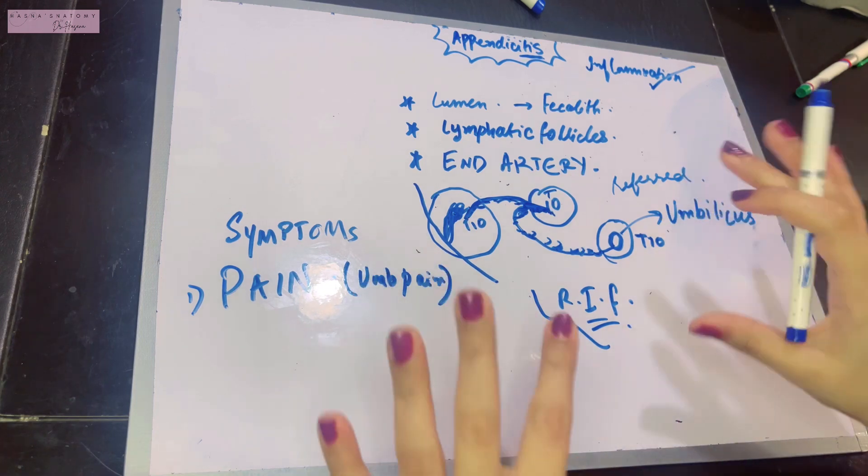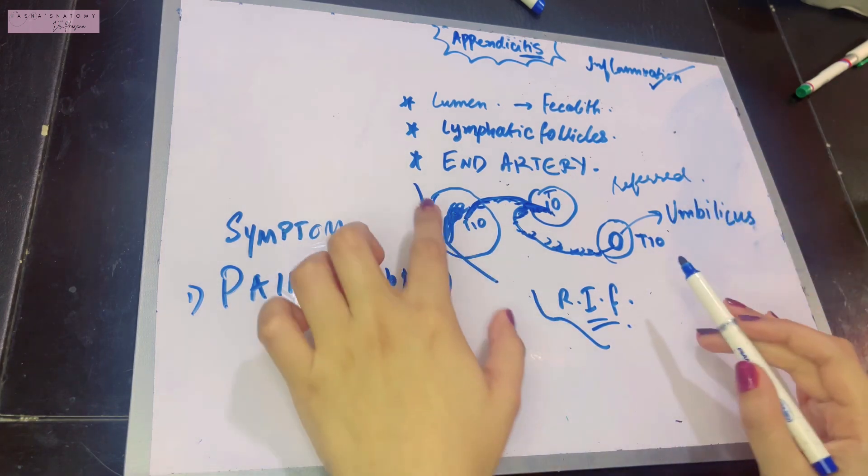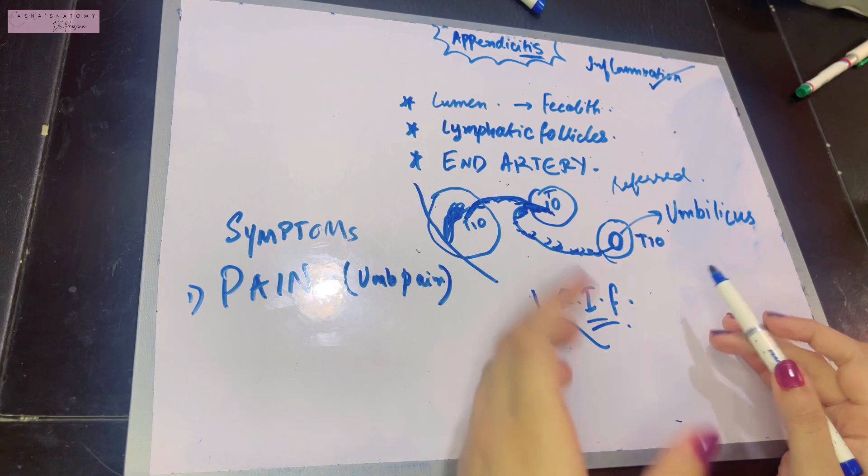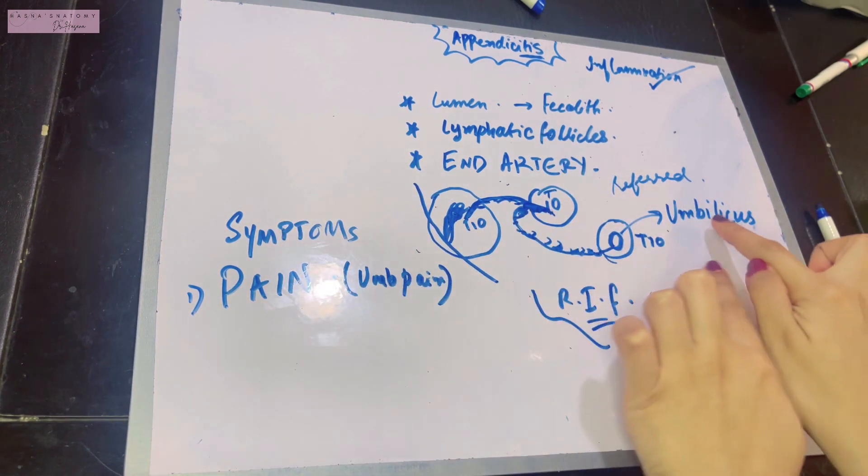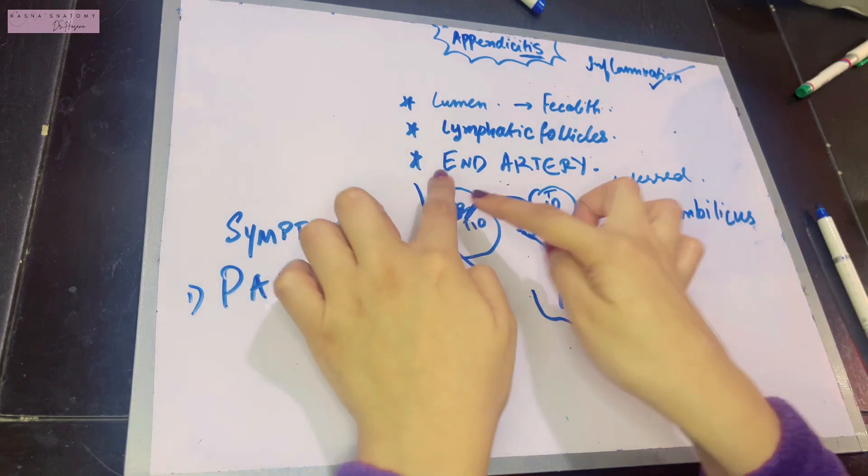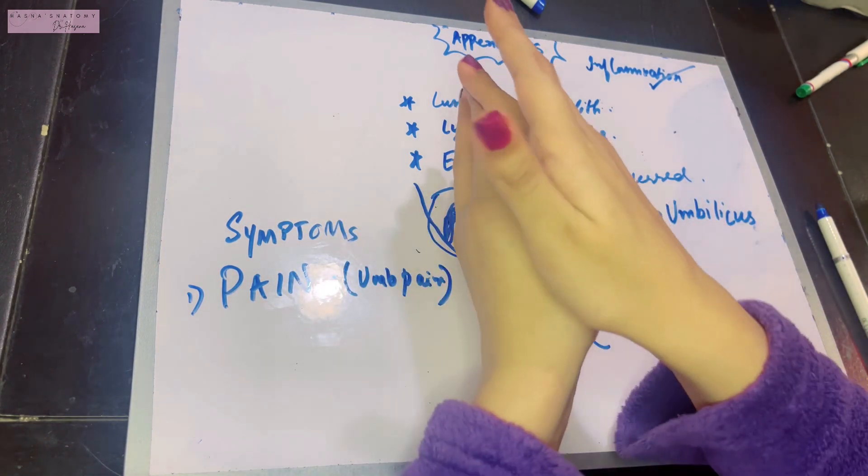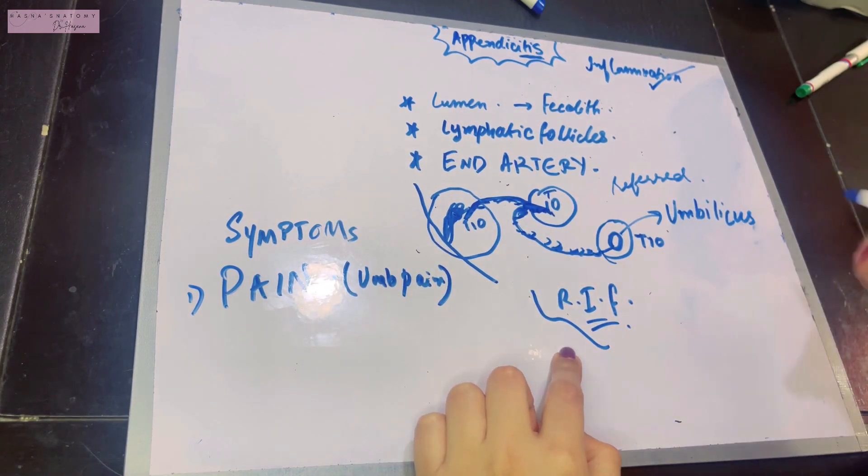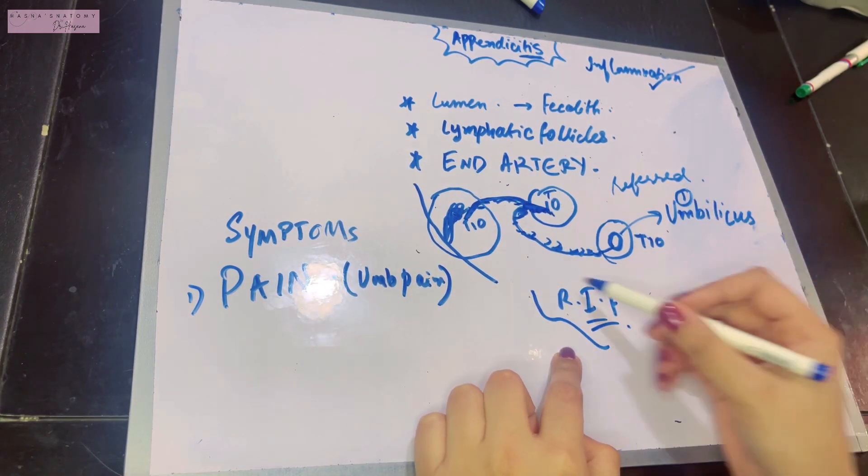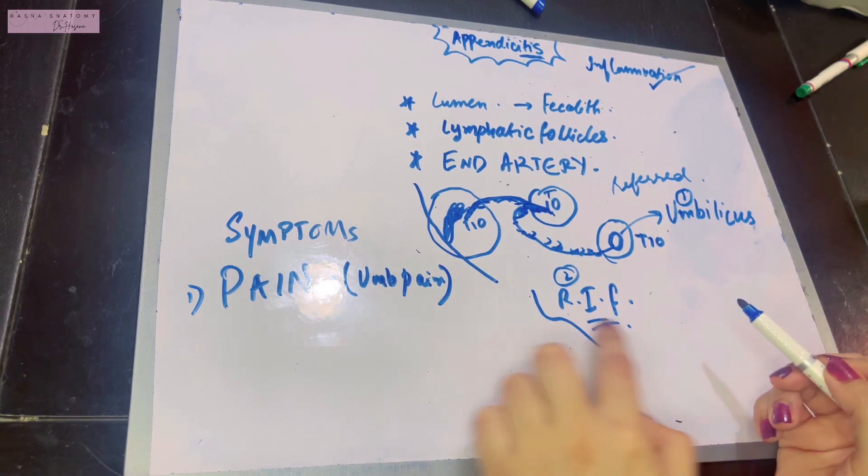Students usually make the mistake of saying the pain of appendix is felt in the right iliac fossa because it lies there. No, the pain of appendix is felt in the umbilicus, but the pain due to appendix causing involvement of peritoneum is felt in the right iliac fossa. The sequence of pain is first umbilicus, second right iliac fossa.